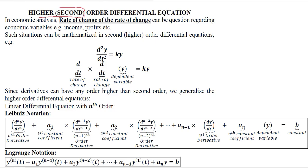As the name guides us, it's about the higher order and the second order derivatives. When we take the second order derivative of any variable or any function, it basically tells us the rate of change of the rate of change, or the rate of change of the slope of a function. This is the basic understanding of the second order derivative, which will be applicable here.